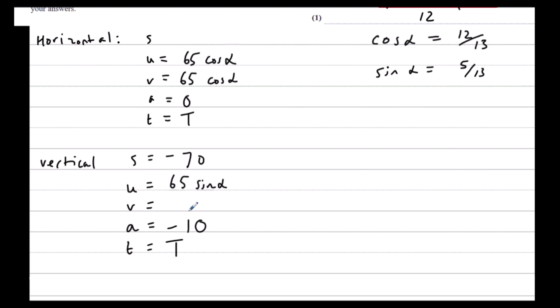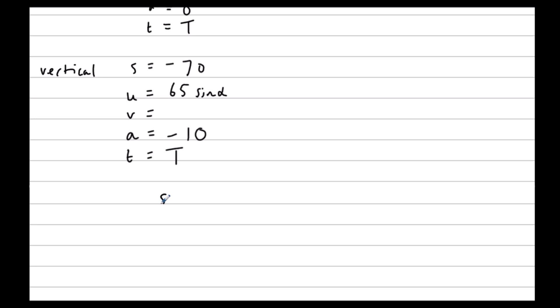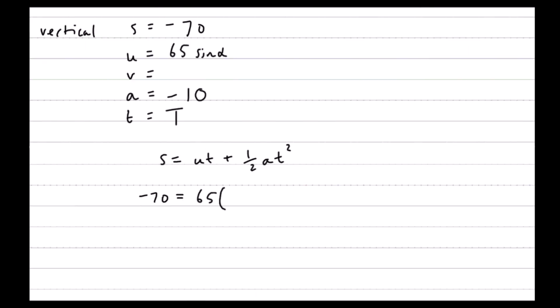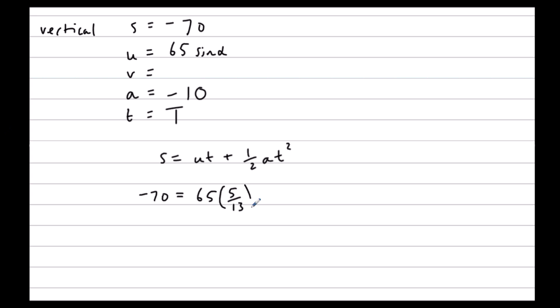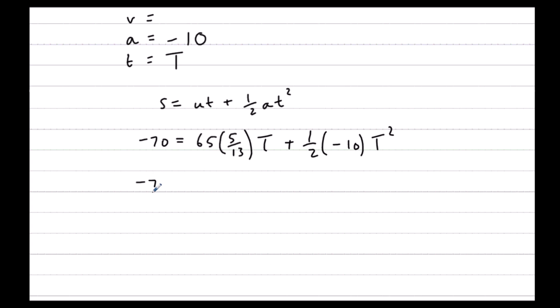We can use S equals UT plus half AT squared, the one without V in it. So negative 70 equals 65 sin alpha. Sin alpha is 5 thirteenths, which is a nice number.